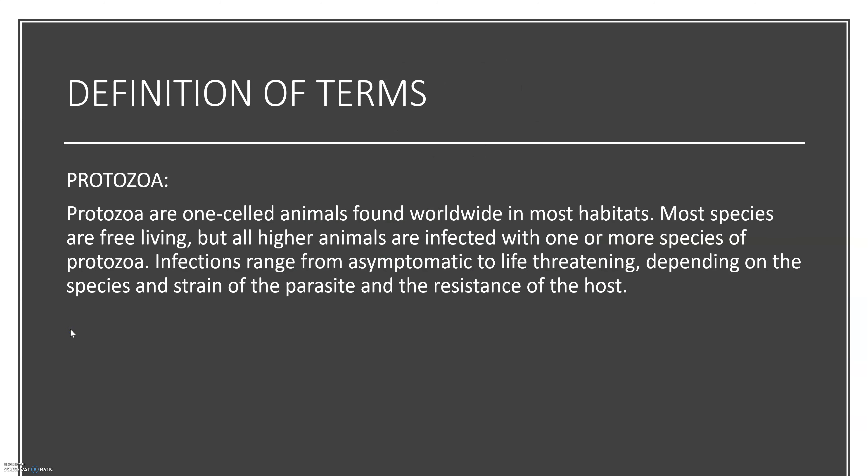By definition, protozoans are unicelled animals found worldwide in most habitats. Most species are free-living, but all higher animals are infected with one or more species of protozoans. Infections range from asymptomatic to life-threatening, all depending on the species and strain of the parasite and the resistance of the host.